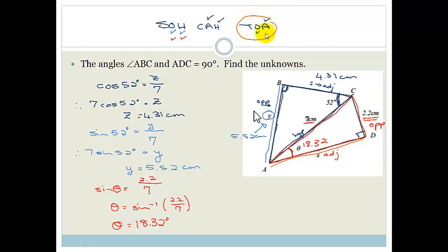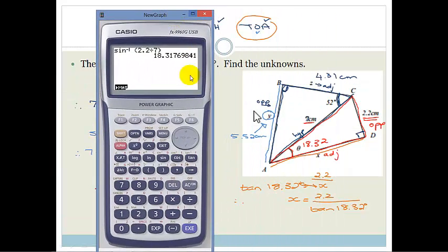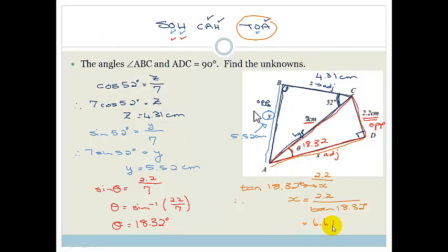So tan is opposite over adjacent. So here is your opposite and here is your adjacent. So we've got tan of 18.32 degrees is equal to the opposite side which is 2.2 over the adjacent side which is X. Therefore I can say that X is equal to 2.2 divided by tan of 18.32 degrees. Because remember all I'm doing is cross multiplying. So now again we need our calculators. And what do we want? We want 2.2 divided by tan of 18.32. And it gives me 6.64.